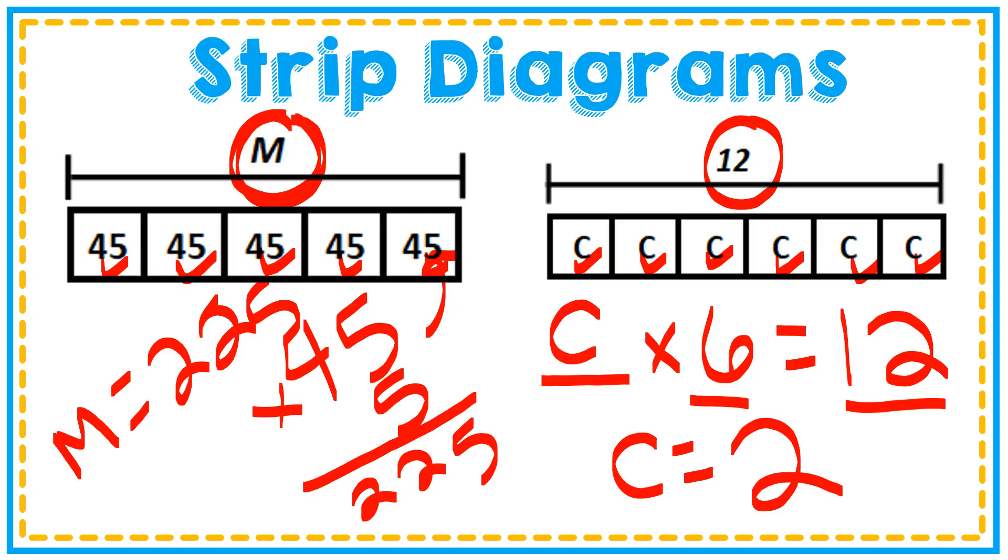It's important to note that on strip diagrams, what you're really looking for, and what you'll see most of the time, is that each box is proportional. In these cases, these boxes were the same size because they represented the same number. But a lot of times, if the number is bigger, it will have a bigger size part. If it's smaller, it should have a smaller size part.